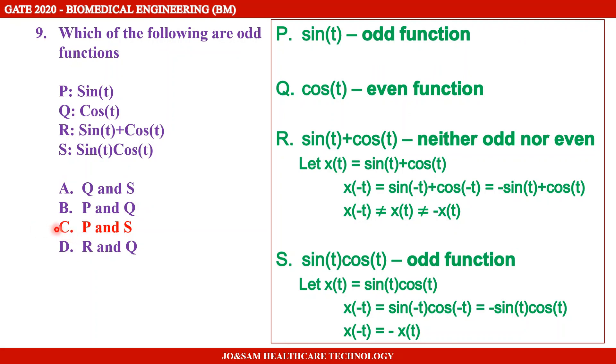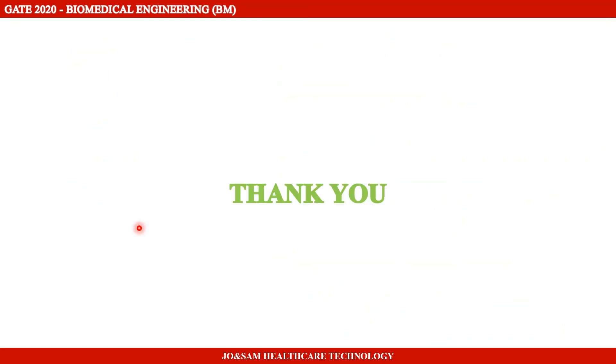So the answer to this question is option C: P and S. Sin t and sin t into cos t are both odd functions. Thank you.